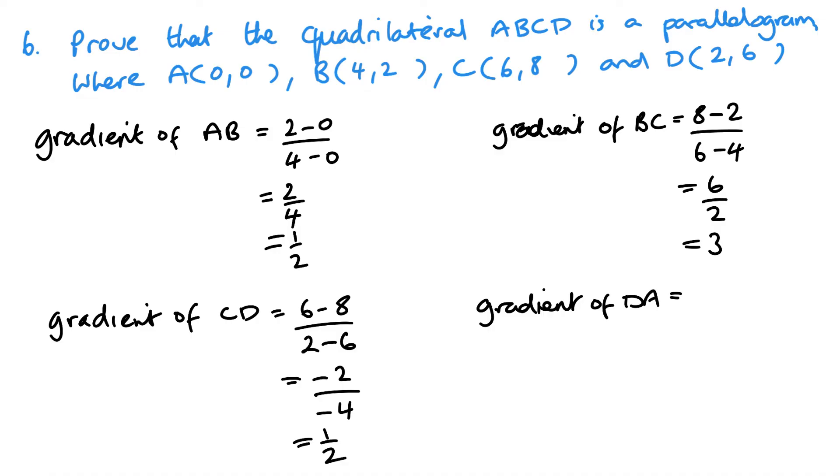And DA. So I'll do A minus D, just to keep it consistent. So you get 0 minus 6 and 0 minus 2. So you get minus 6 over minus 2, which is 3. So we can see that we've got two gradients of a half and two gradients of 3. And this is what we're left with.